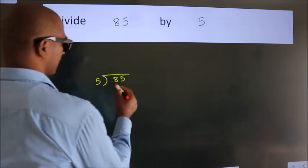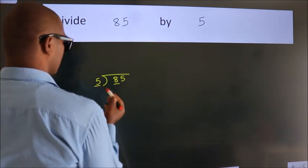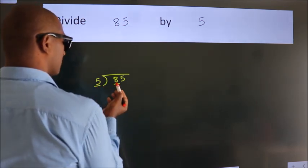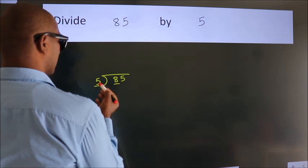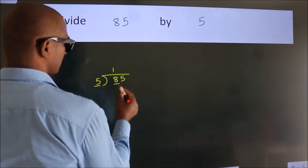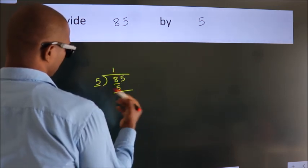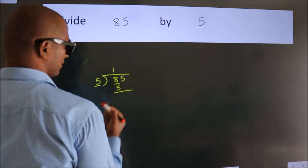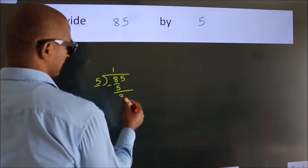Here we have 8, here 5. A number close to 8 in the 5 times table is 5 ones, which is 5. Now we should subtract. We get 3.